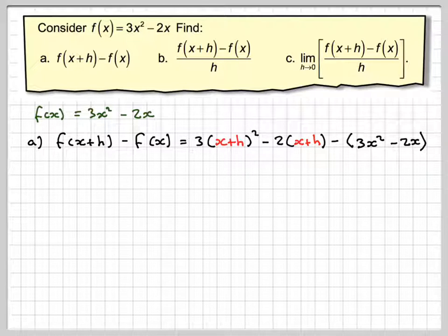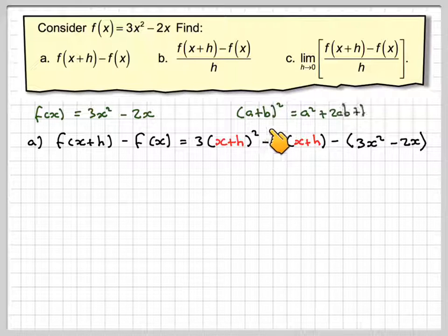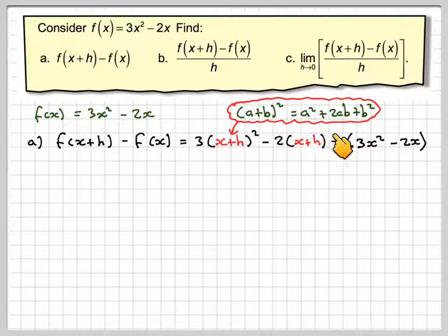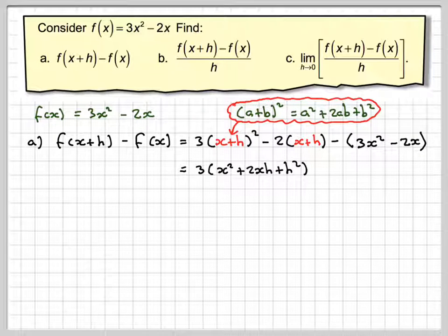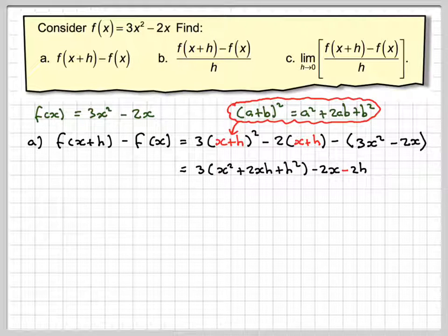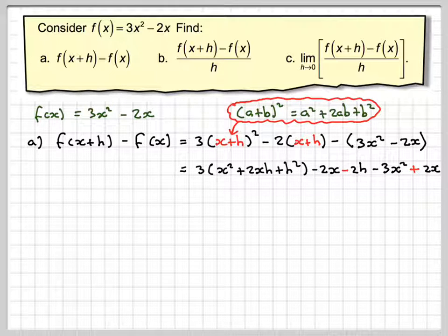To expand this, use (a+b)² = a² + 2ab + b². Applying it, leave the 3 out to begin with. We get x² + 2xh + h² - 2x - 2h - 3x² + 2x.